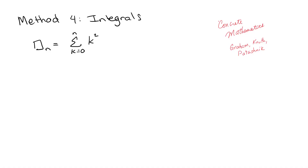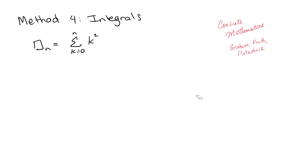We're continuing to make our way through Concrete Mathematics by Graham, Knuth, and Patashnik. This particular section is 2.5, where we're looking at different ways to take a summation and rewrite it in closed form. We've had methods like look it up, guess and check, perturbing the sum, and the repertoire method. Now we're looking at doing this with integrals.